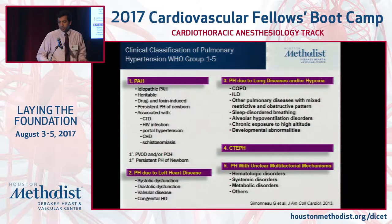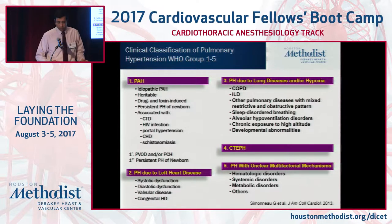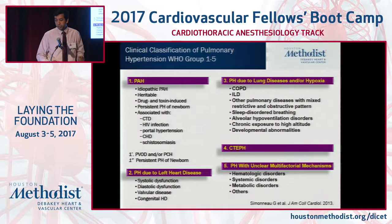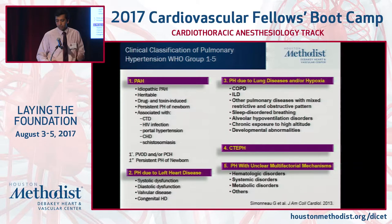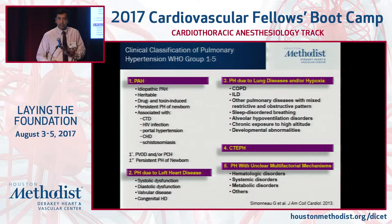The classification of PH is the WHO classification. Group one is where most PH patients fall into, and it could be due to heritable PH, drug or anorexigen-induced PH, and PH associated with connective tissue disease, HIV, portal hypertension, congenital heart disease — ASD, VSD, Eisenmenger's — and those associated with schistosomiasis. PH due to left heart disease is the most common; as cardiologists, this is what we'll end up seeing most.